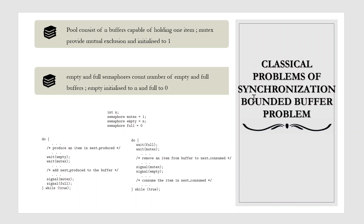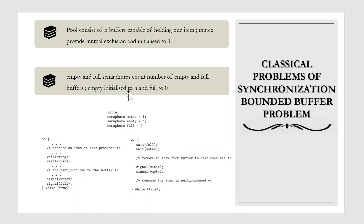Now let's look at the bounded buffer problem, which is a classical problem of synchronization. Here the producer and the consumer share the following data structures. We assume that we have a pool consisting of N buffers, each capable of holding one item. The mutex semaphore provides mutual exclusion for access to the buffer pool and is initialized to the value 1. The empty and full semaphores count the number of empty and full buffers. The semaphore empty is initialized to N, and the semaphore full is initialized to 0.